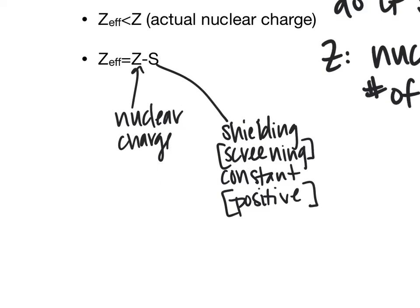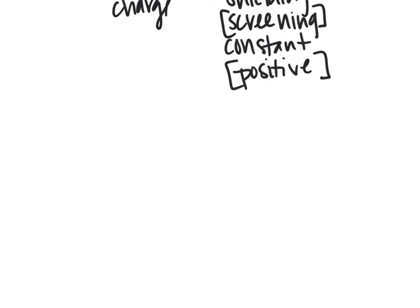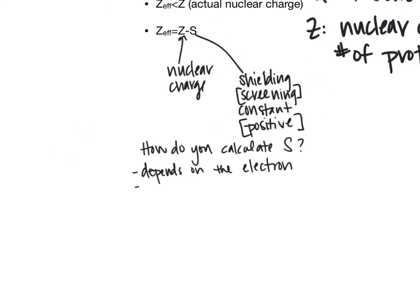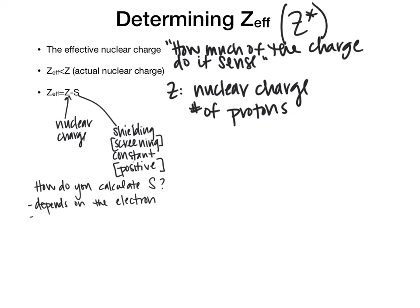For any element, we can calculate Z-effective, where it's the nuclear charge minus the shielding coefficient. But the question is, how do you calculate S? The thing with S is, it's different for every electron. The other thing we have to think about is that it matters whether it's in a full shell or a part of a partially filled shell, and what is the arrangement in this case.